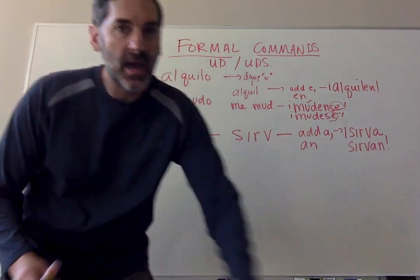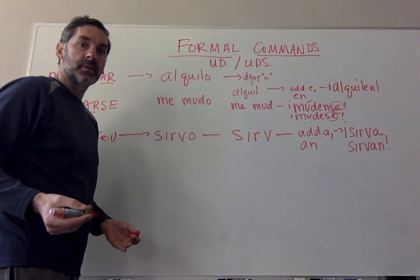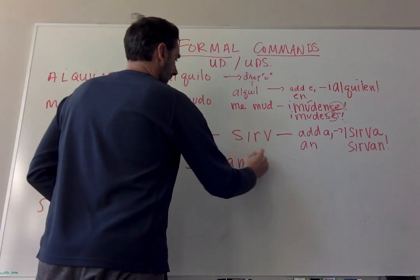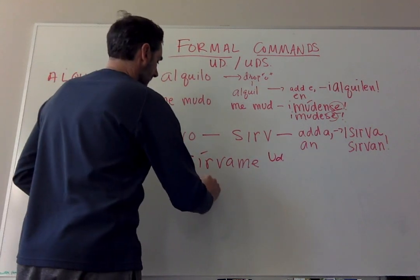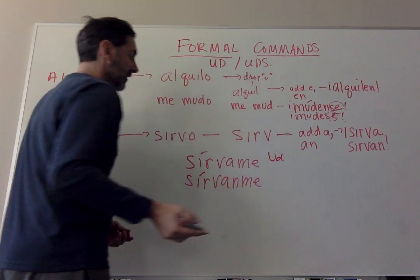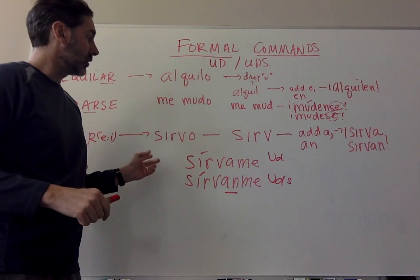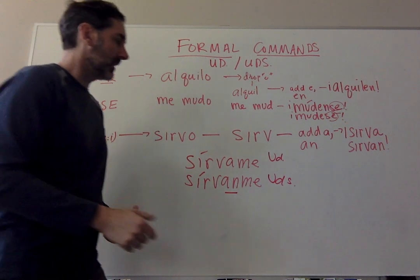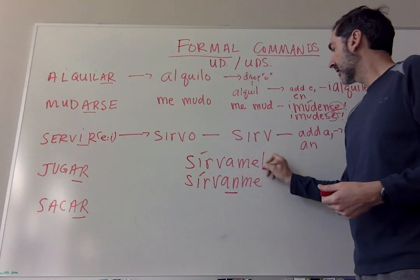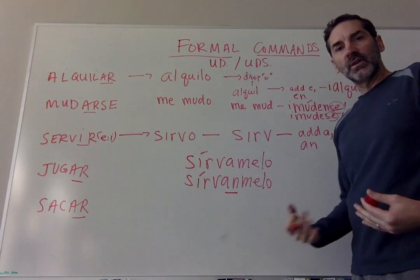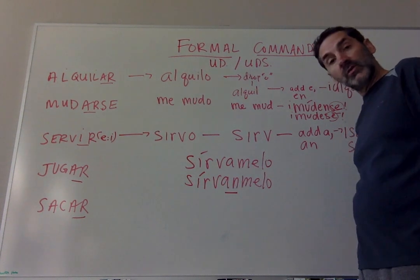Let's add a pronoun to it — 'serve me.' How would we say that? Sírvame. Sírvame usted. Sírvanme ustedes — attached to the positive command. When we make it negative: no me sirva, no me sirvan. Now let's add a direct object pronoun: sírvamelo, sírvanmelo — 'serve it to me.' The accent stays the same: sírvamelo, sírvanmelo.